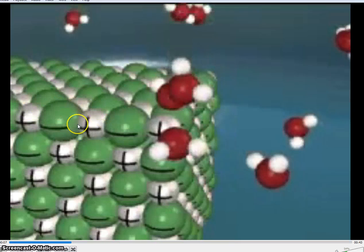The white ones are sodium. They have a positive charge. And the green ones are chloride. They have a negative charge.